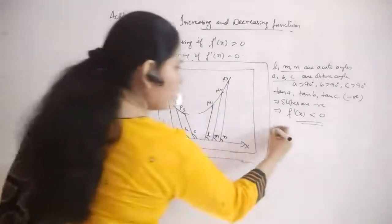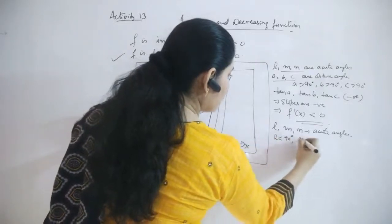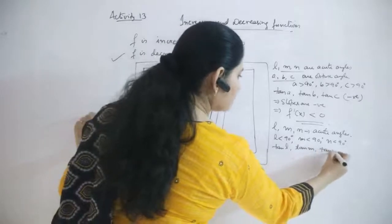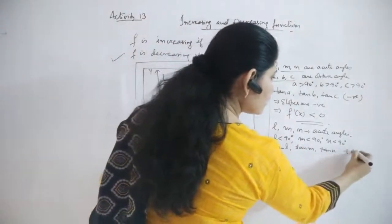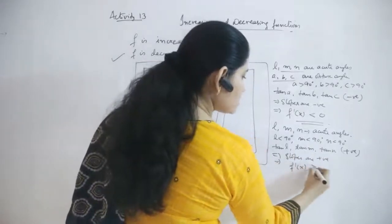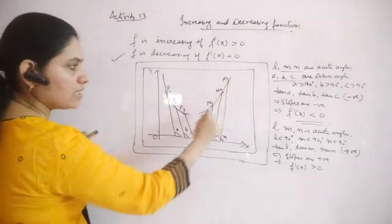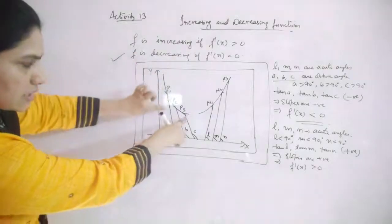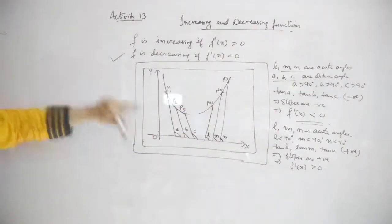For the other curve, angles L, M, and N are all acute — less than 90° — so tan L, tan M, and tan N are positive (first quadrant). Positive tan means positive slope, which means f'(x) > 0. You can see the curve rising as x increases, confirming the function is increasing when f'(x) > 0, and decreasing when f'(x) < 0.